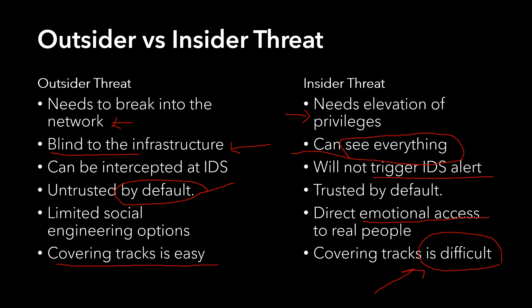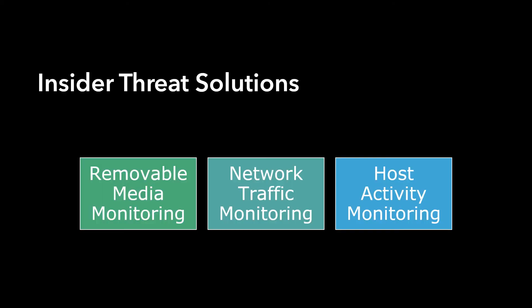Let's briefly look at the kinds of solutions for insider threats. The first solution, which was very popular in the early 2000s through around 2010, was removable media monitoring — because everything was USB connected and people could bring in pen drives and take data. This was successful as a first step. However, nowadays removable media is rarely used; everything is on the cloud, email, or GitHub. So while it is still required, it is not sufficient on its own.